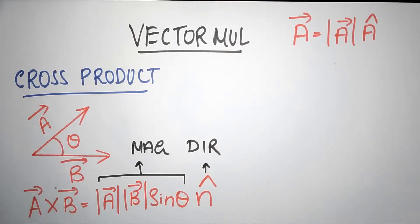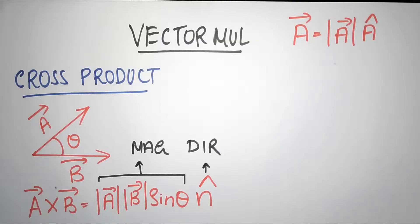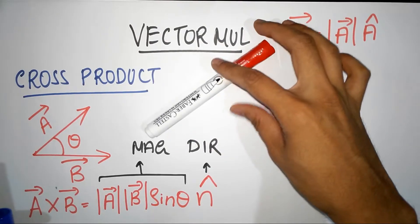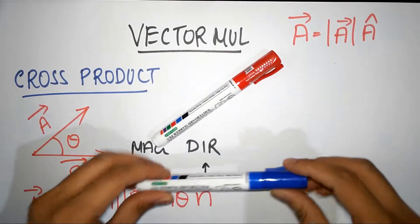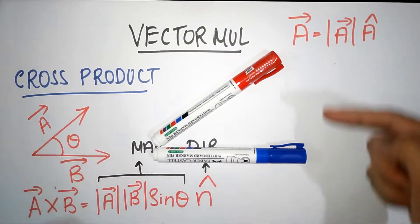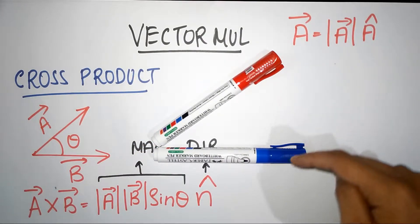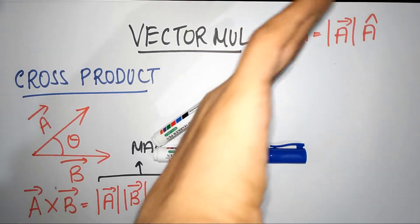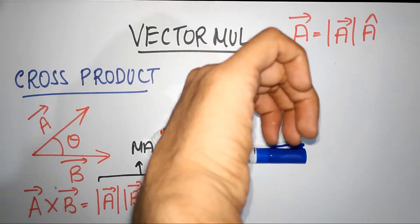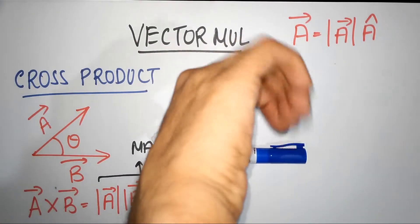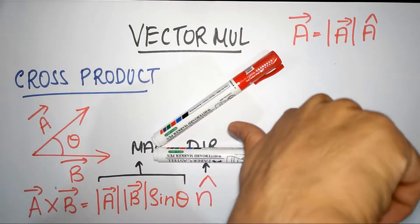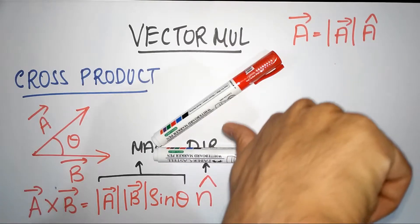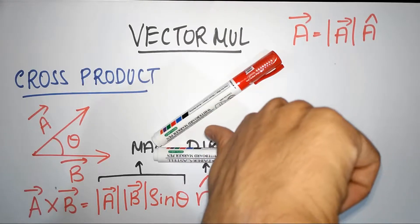The direction is given by what we call the right-hand rule, and the right-hand rule is pretty simple. If you have two vectors — here is vector A and here is vector B, the red one is A and this is B — and if you want to calculate A cross B, you take your right hand so that the four encircling fingers give you the direction of the cross. Then the thumb represents the direction of n-cap.